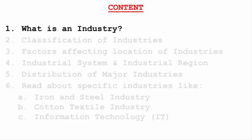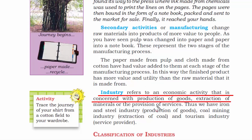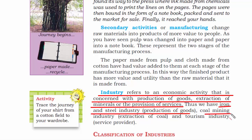So what is an industry? The definition says industry refers to an economic activity that is concerned with production of goods, extraction of minerals, or the provision of services. In simple terms, you go out in the world, find whatever you can extract, produce, refine, and serve to the people — that is where an industry is born.